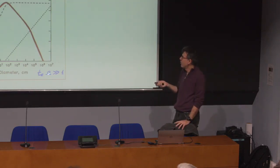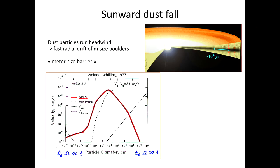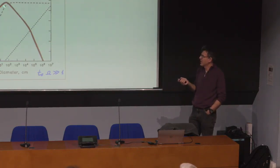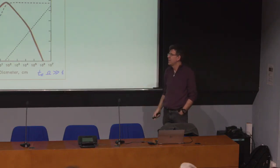For very large bodies — planetesimals of a few to tens of kilometers — gas drag barely affects them because the body has large mass and the gas is very tenuous. In between, at a few centimeters to a meter, friction is optimal and migration speeds are highest — of order 10⁴ cm/s, roughly 0.1 km/h. These intermediate particles really move very fast in the disk.